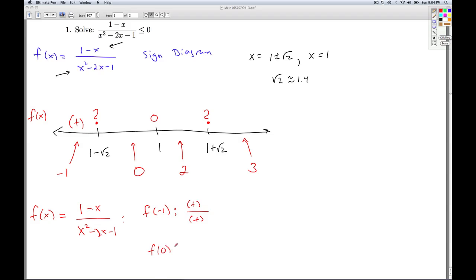Now I substitute in 0. In the numerator, I get a positive number. In the denominator, I get a negative number. So altogether, I get a negative. I substitute in 2. In the numerator, I get 1 minus 2, which is a negative 1, so it's negative on the top. On the bottom, I get 2 squared, which is 4, minus 2 times 2, which is 4. So that's a 0 minus 1, which is another negative. And a negative over a negative is a positive.